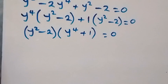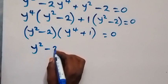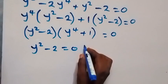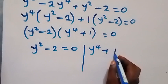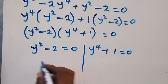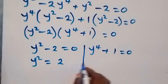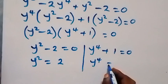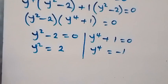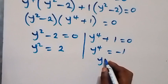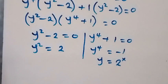Two possible cases: y squared minus 2 equals 0, and also y raised to power 4 plus 1 equals 0. On the first case, y squared equals 2. From the second case, y raised to power 4 equals minus 1. Recall that y is the same thing as 2 raised to power x from the beginning.